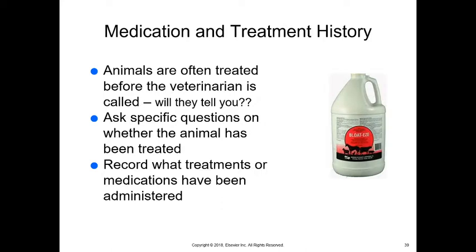Animals, especially large animals, are often treated before the veterinarian is called. Most large animal clients will tell you what they've done — they do a lot of their own treatments. An example is bloat treatment products sold over the counter. If an animal is bloated from eating too much of a substance causing fermentation in their intestinal tract, these products help ease the bloat. We need to know if it's been used and when, as it may change our treatment.